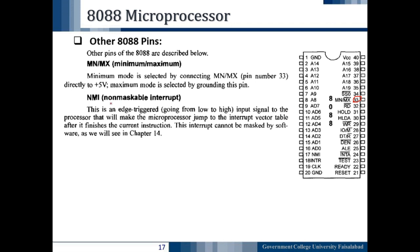The next pin is NMI — Non-Maskable Interrupt — pin number 17 of the 8088 microprocessor. It is a positive edge-triggered input signal, meaning it works on the transition from low to high rather than for voltage levels, making it more sensitive. It causes the microprocessor to jump to the interrupt vector table after finishing the current instruction. This interrupt cannot be masked by software; we will see more detail in Chapter 14.